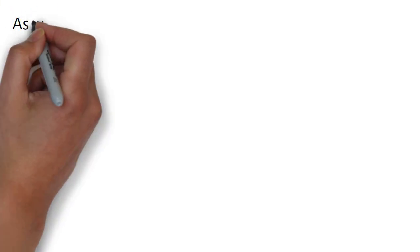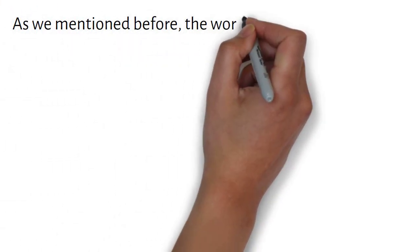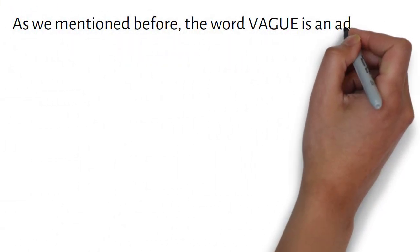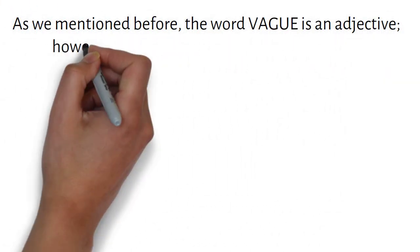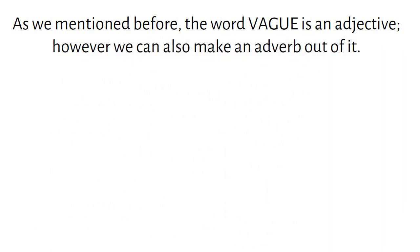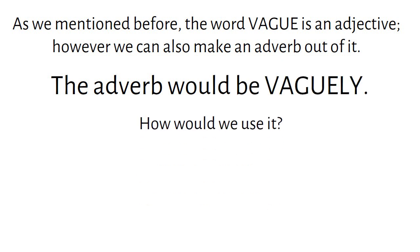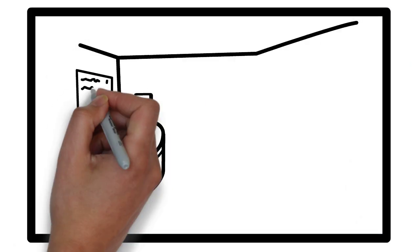As we mentioned before, the word vague is an adjective. However, we can also make an adverb out of it. The adverb would be vaguely. How would we use it? Here's an example.